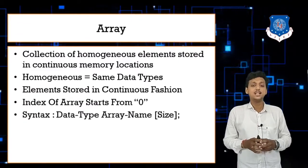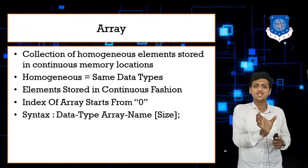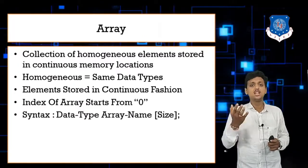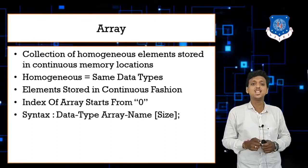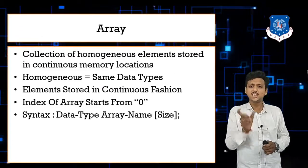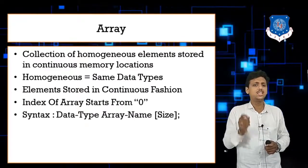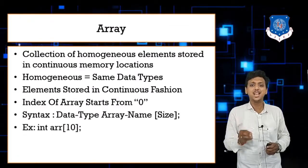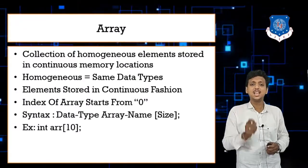To define an array, we write the data type, then the array name, then the size. The data type can be integer, float, or character. The array name should be meaningful — for example, if you want an array of students, name it 'std' or 'students'. The size is written in square brackets, like 5 or 10. For example, to declare an integer array of size 10: int a[10].